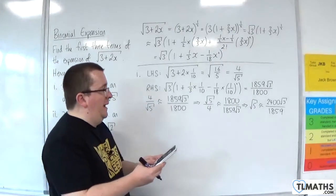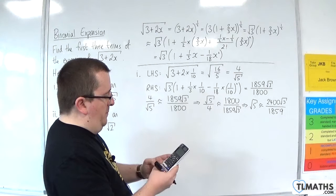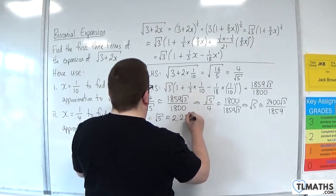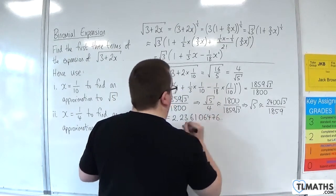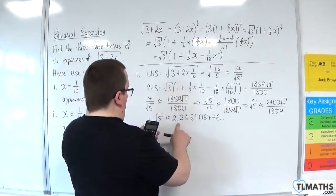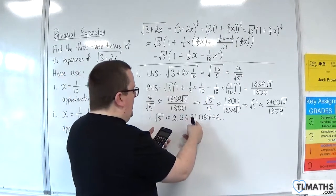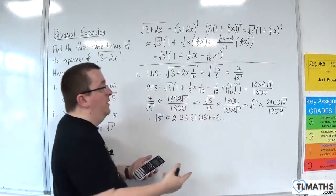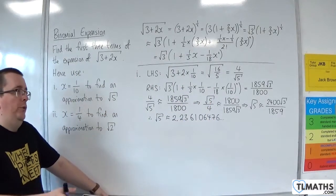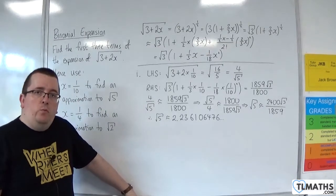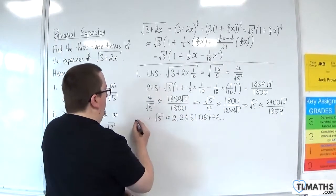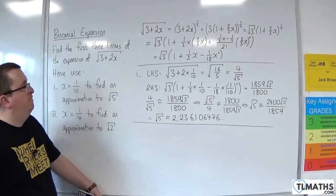Let's see how close we actually are. 2400 times root 3 divided by 1859 gives root 5 approximately equal to 2.236106476... Now if we type root 5 into our calculator, we get 2.2360679777... So they are pretty close — all I needed was the first three terms of the binomial expansion. Of course, for this example I needed to know what root 3 was. But using root 3, I could get an approximation of root 5.